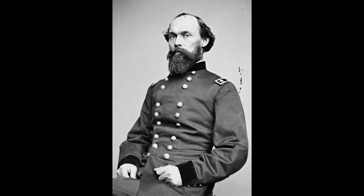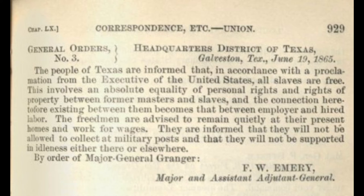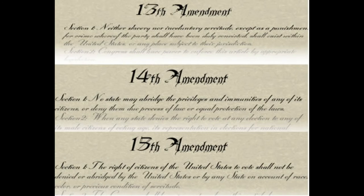On June 19th, 1865, Union Major General Gordon Granger arrived in Galveston, Texas with 2,000 troops and a message saying that all slaves were free in the state of Texas. This historical event is known as Juneteenth.